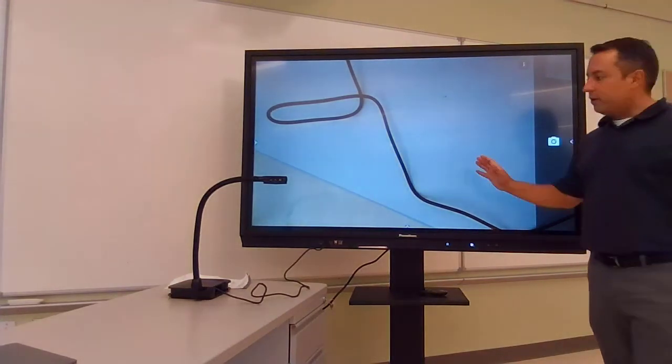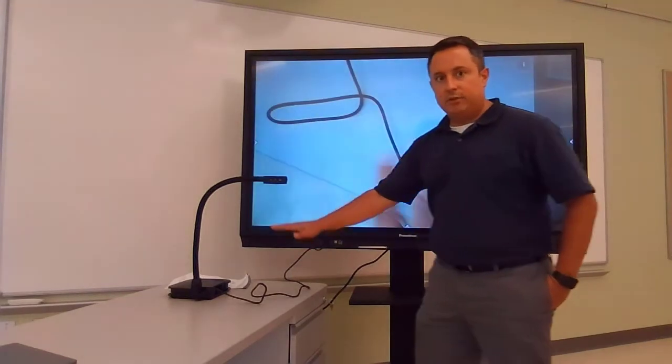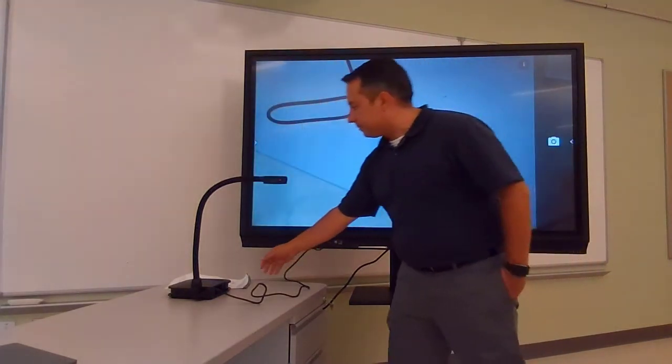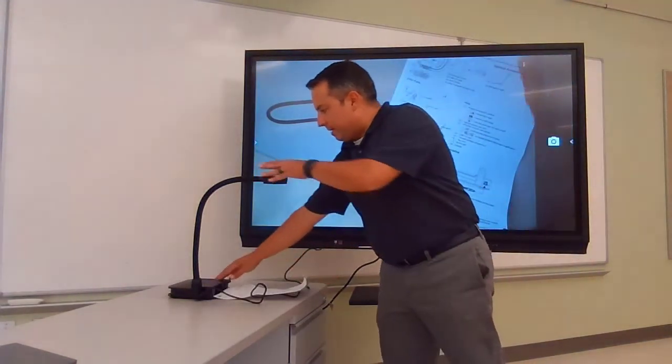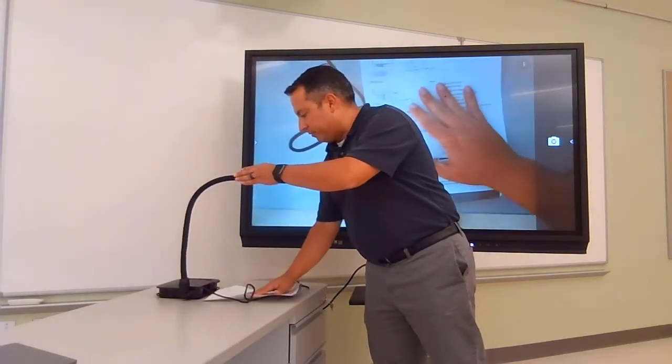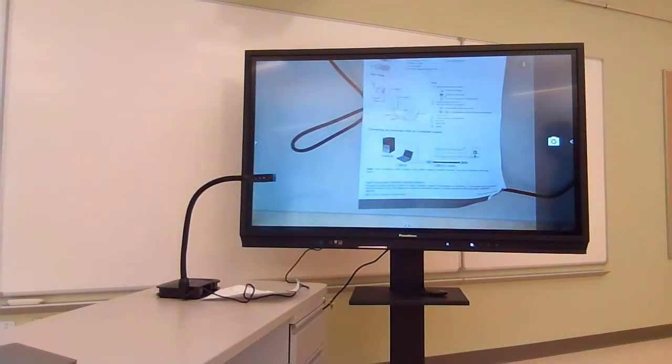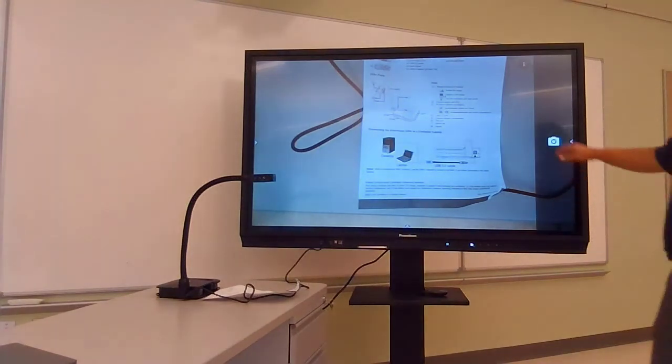You're also going to be maybe prompted to remember photo locations, tag your photos and videos with locations where they're taken. You can check or uncheck that depending on your level of paranoia. Once I have done that, you're going to see that I have an image here being displayed.